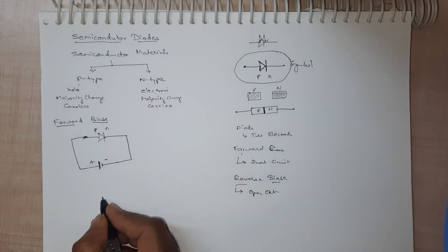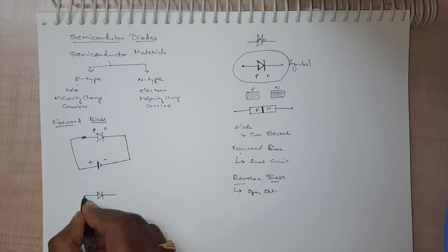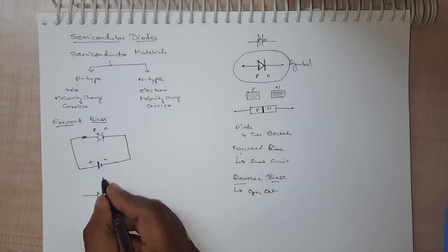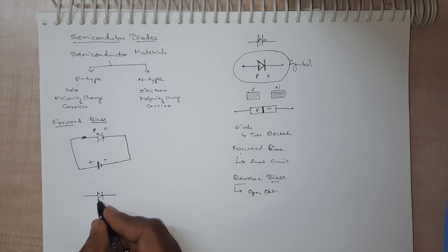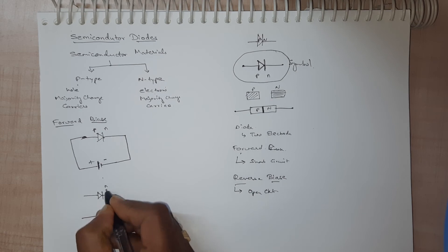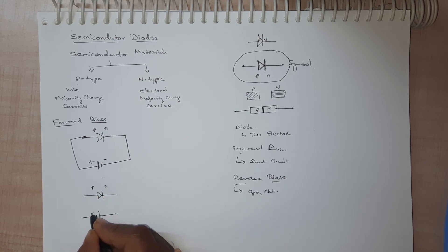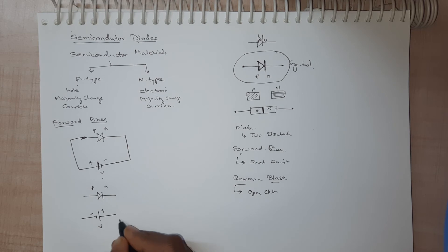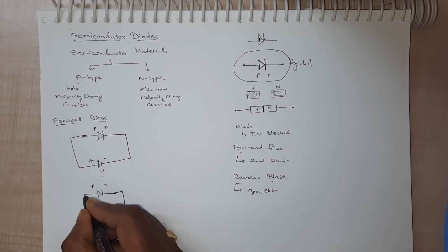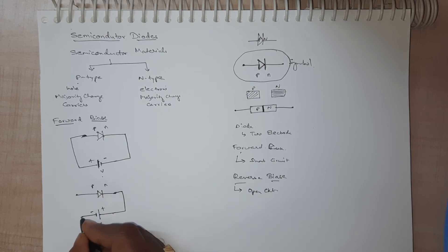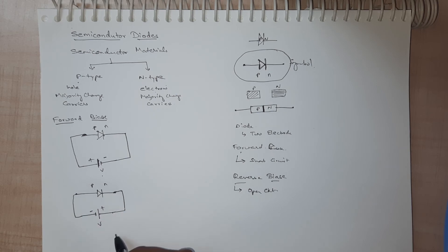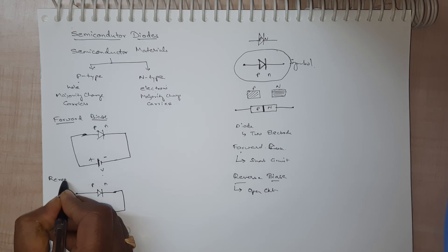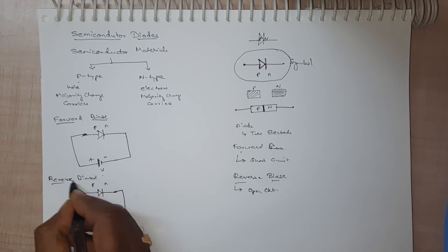Now what is reverse bias? In reverse bias, we keep the diode the same way but reverse the polarity of the input source. That is, the P-type side of the diode is connected to the negative terminal of the battery, and the positive side of the battery is connected to the N-side of the diode. This kind of circuit combination is called reverse bias — the diode is reverse biased.